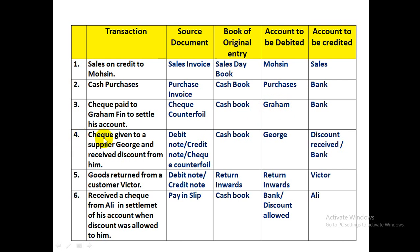Transaction 4: Check given to supplier George, with a discount received from him. The source document is the check counterfoil; the discount received can also be identified through a debit note or credit note. Checks issued are recorded in the cash book. Trade payable George is debited to settle the account, discount received is credited, and bank is credited.